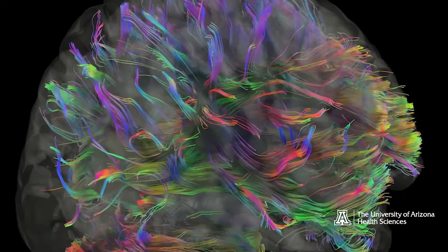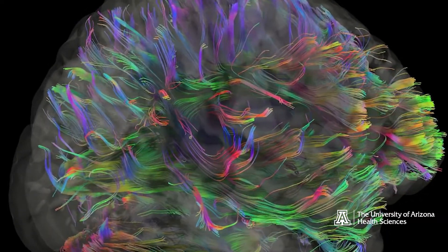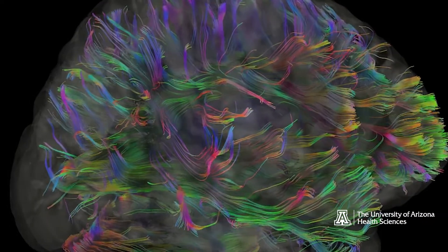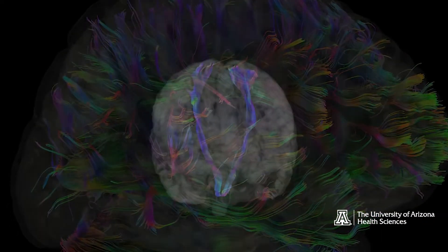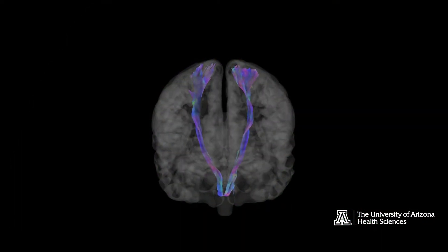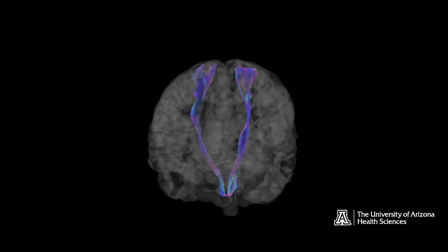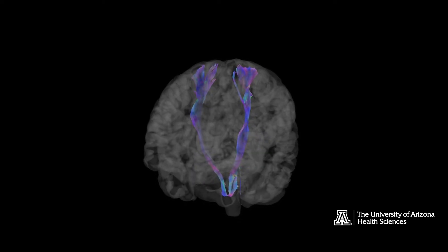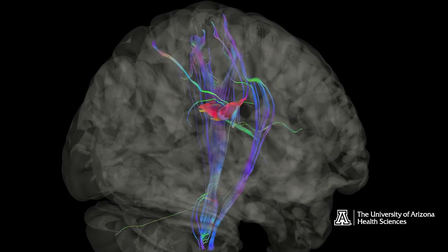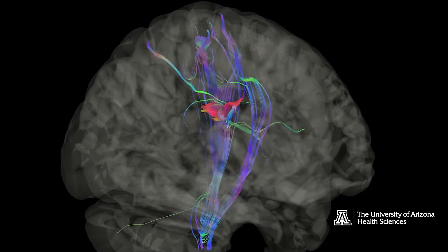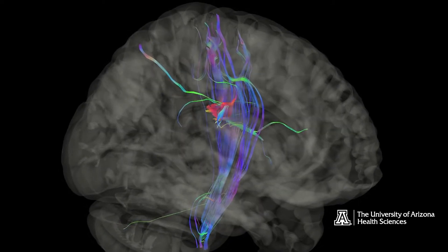That allows us to map out the nerve fiber bundles as they traverse the brain, and this gives us a perspective of the whole brain's anatomy. The colors in this image indicate the direction of fibers that are being tracked. For example, blue fibers go up and down, and in this case represent corticospinal tracts connecting the brain to the rest of the body.